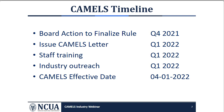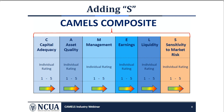This means that every exam started on or after April 1st will use the CAMELS rating system, regardless of the examination's effective date. Starting on April 1st, the composite CAMELS rating will encompass six individual components, each with a rating of one to five. There will be no change to the risk evaluation process. The sensitivity to market risk or interest rate risk will be documented in the separate S component, and the liquidity rating in the L component.